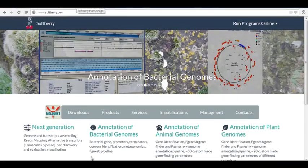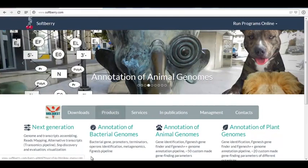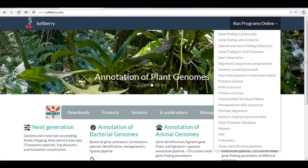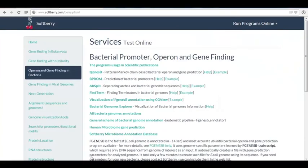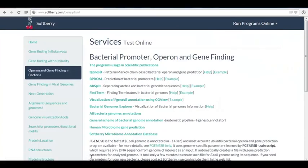Let's look at SoftBerry. SoftBerry has a recently redesigned front page. You go to the top right corner to run programs online, and we want the third one down, operon and gene finding in bacteria. We see some algorithms here, and the one we want is FgenesB.